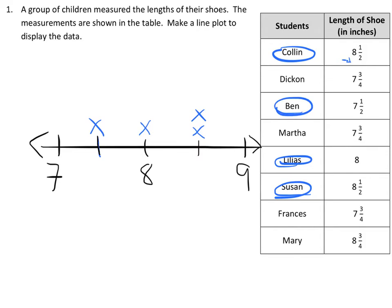Now I have some fourths. I have to redraw my hash marks so that I have fourths in between, and I've got to find eight and three-fourths, seven and three-fourths, seven and three-fourths, and seven and three-fourths again. A lot of students have that shoe size.